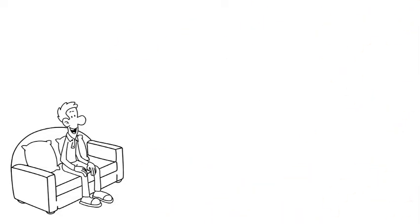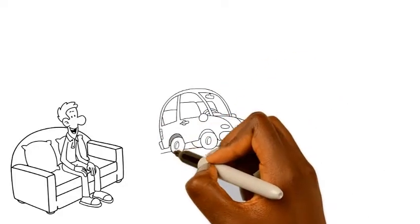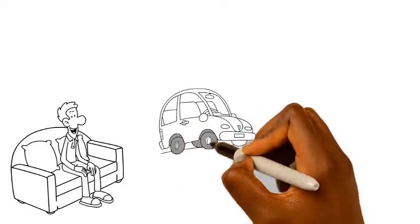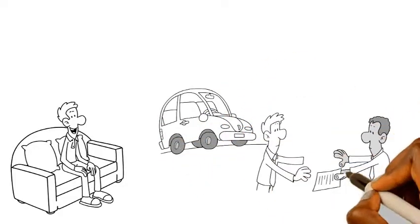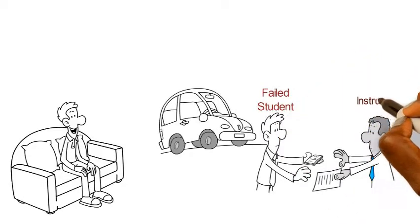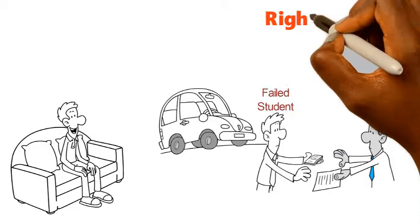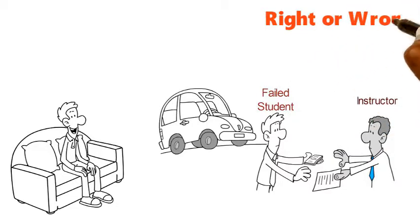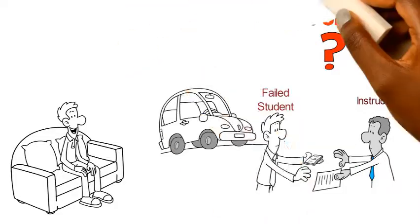Scenario 8. When Charles failed his driving test, the instructor told him that for a small payment, he could get his driver's license without taking the test a second time. Is the instructor's behavior right or wrong? Why is his behavior right or wrong?